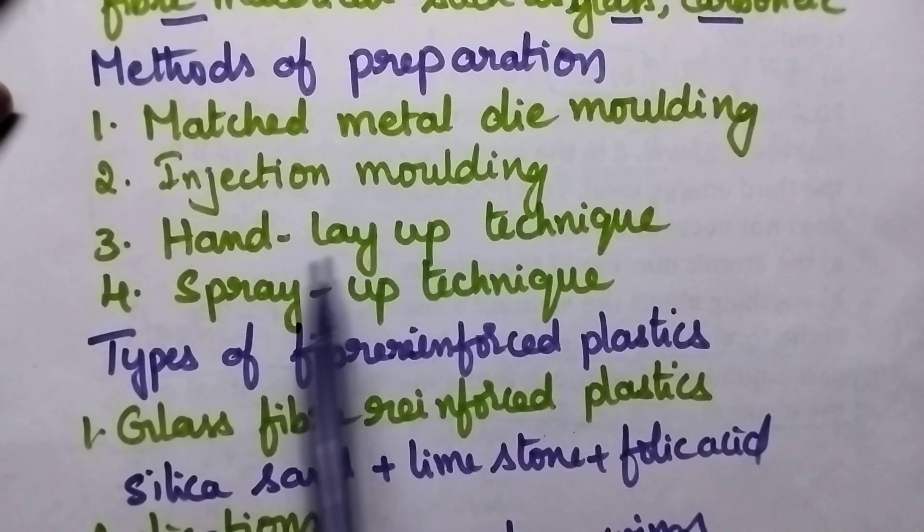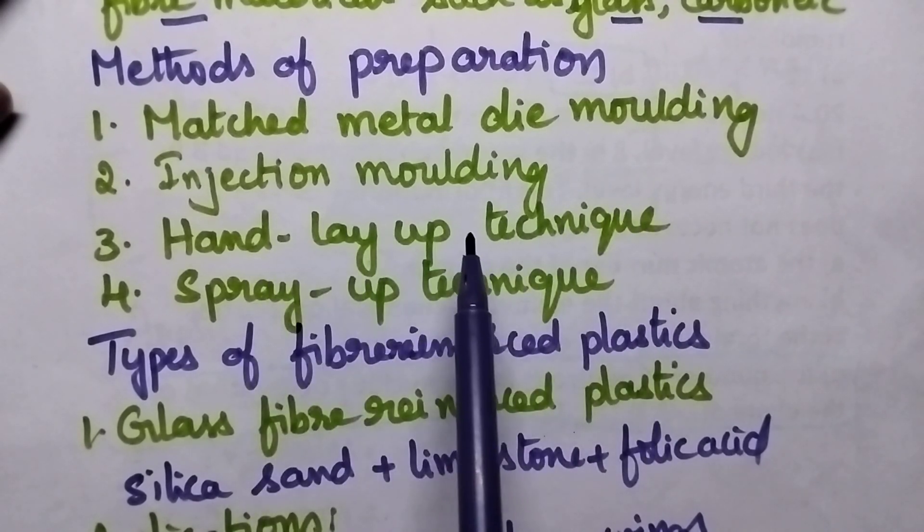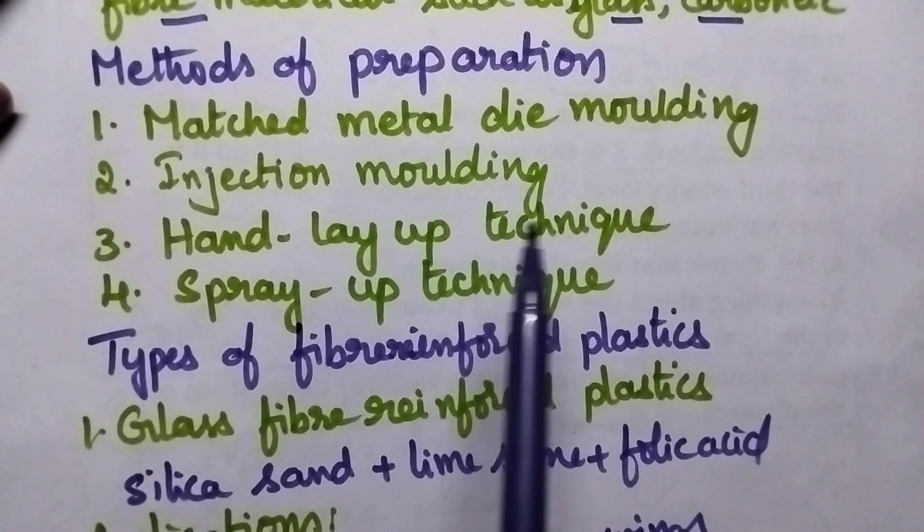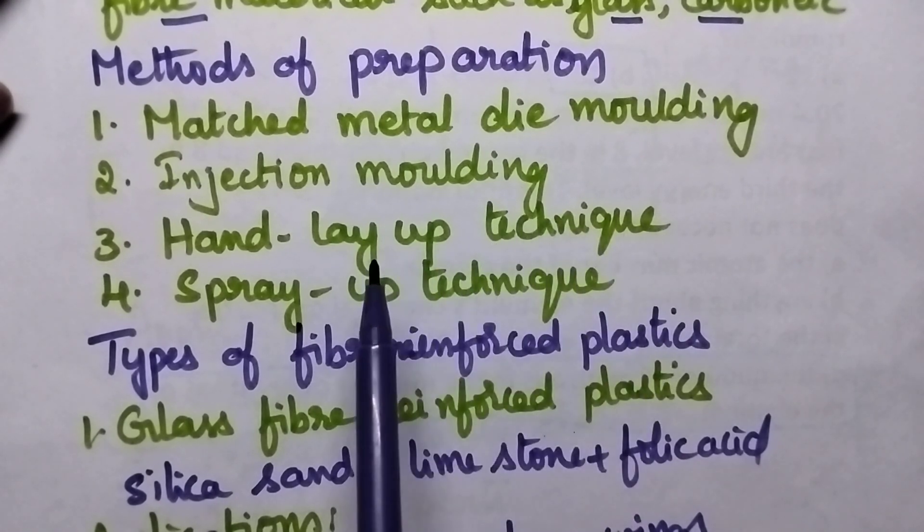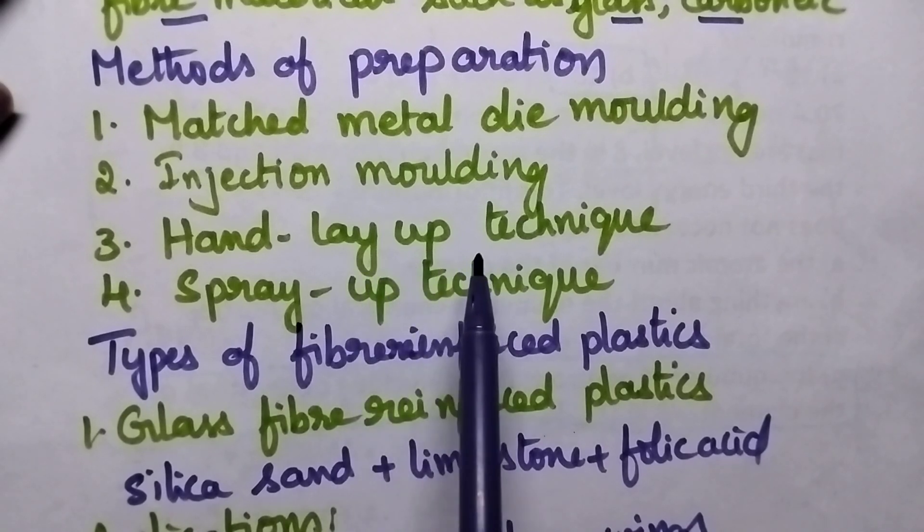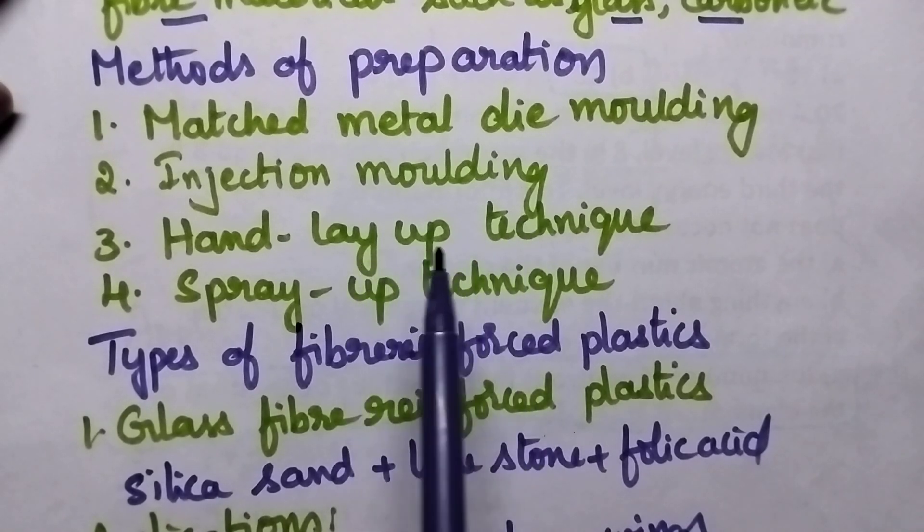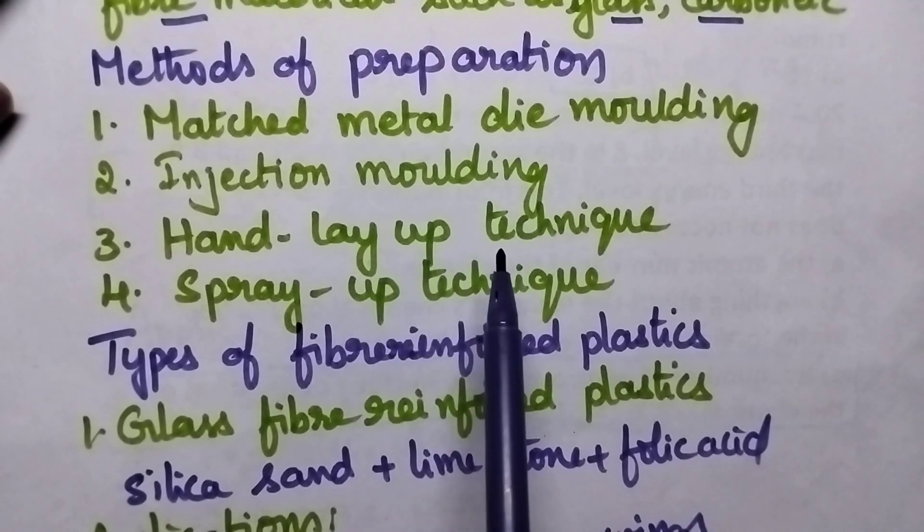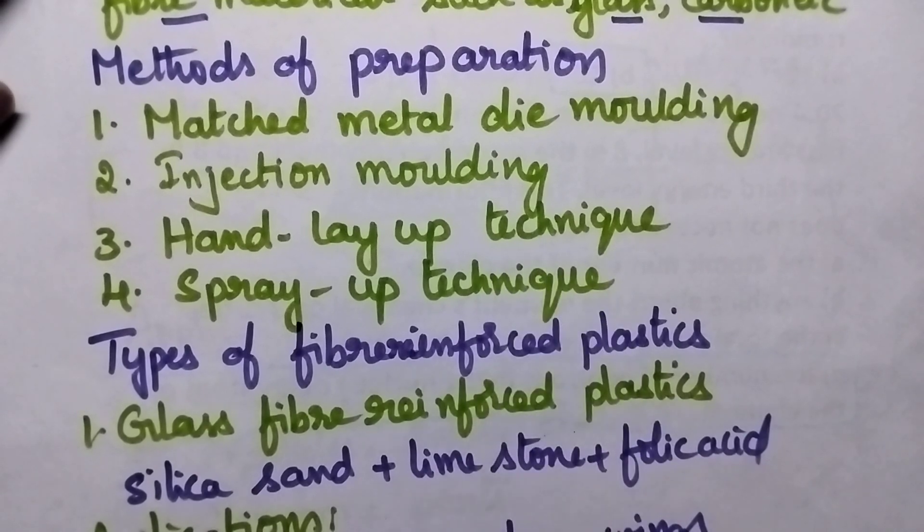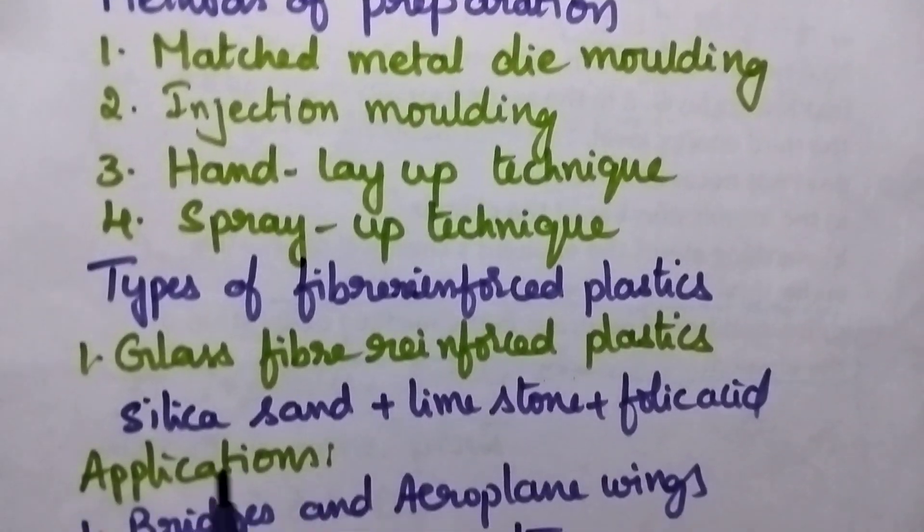Hand lay-up technique and spray-up technique are mainly used for the preparation of fiber reinforced plastics, where the plastic matrix and fiber are applied simultaneously, resulting in the formation of fiber reinforced plastics. Coming to the types of fiber reinforced plastics.